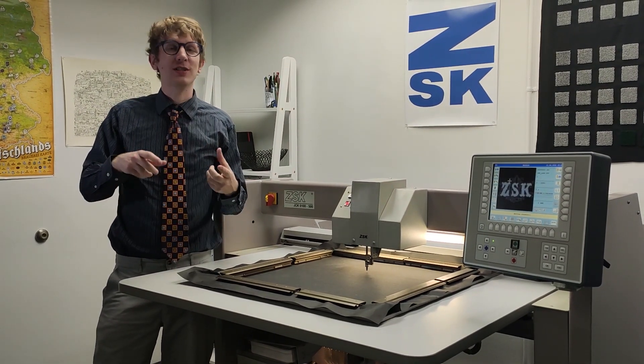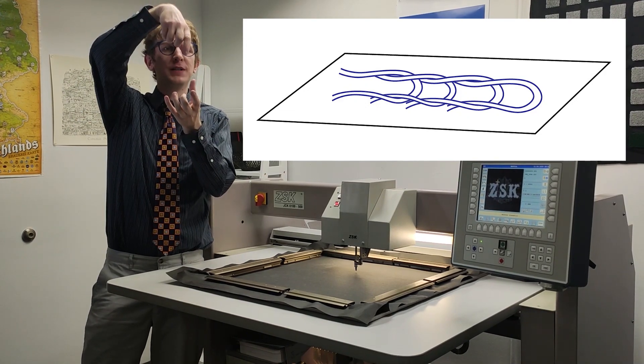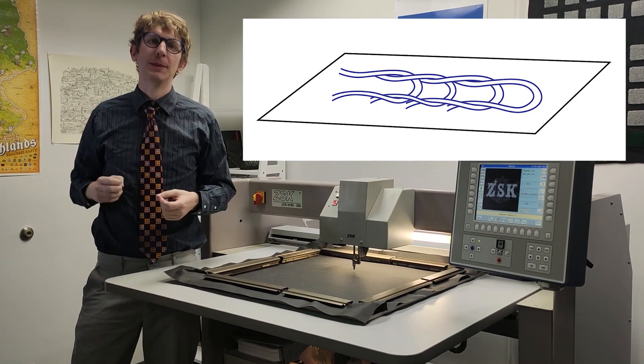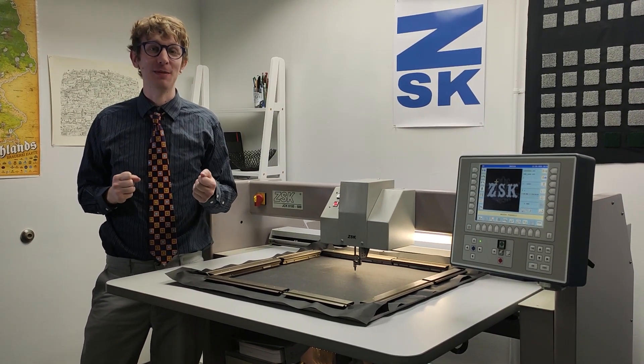Also this machine can do something called chain stitching which allows us to actually take those loops, bend them over on the side and create another loop inside, allowing little chains to be formed on the surface of the fabric. This has some really cool technical applications which we'll get to in a minute.